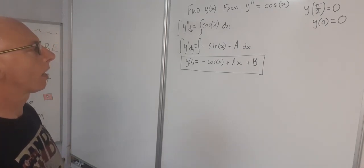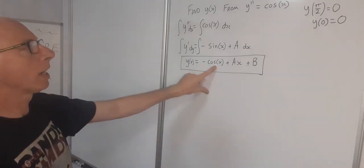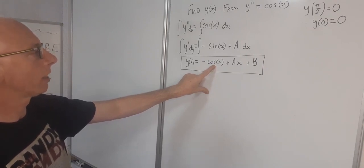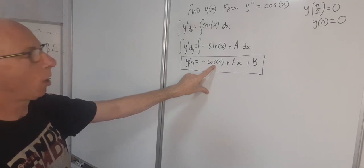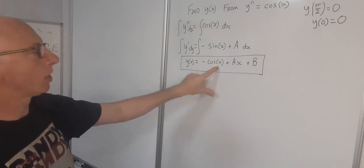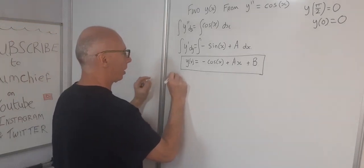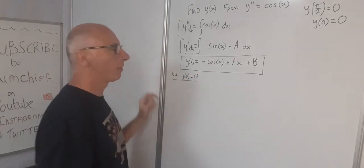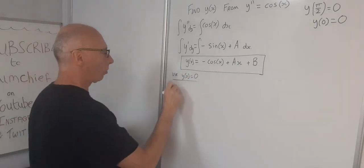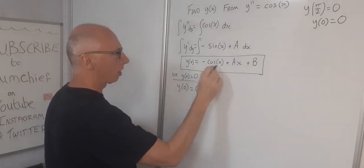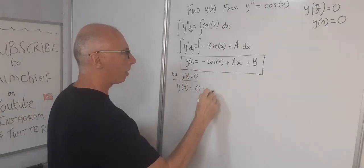So if I plug in 0 into here, this cosine will become 1. So I'm going to do that first. So let's use y of 0 equals 0. So y of 0 equals 0 equals, now I'm going to plug in this, minus cosine of 0.